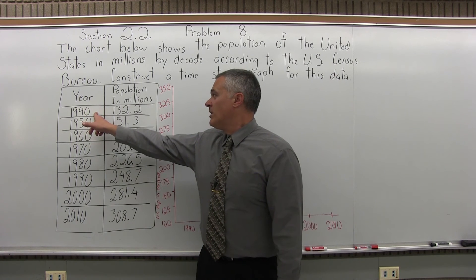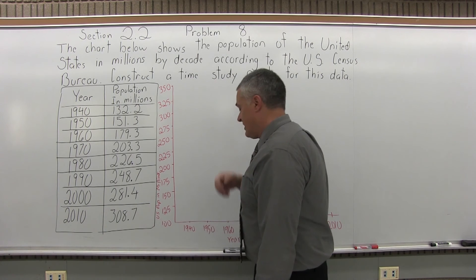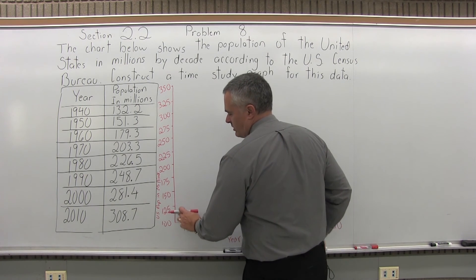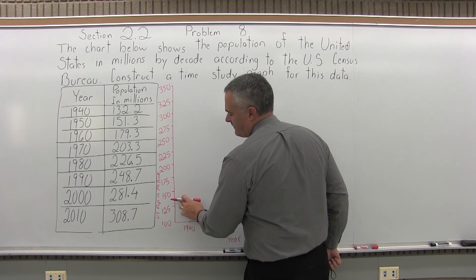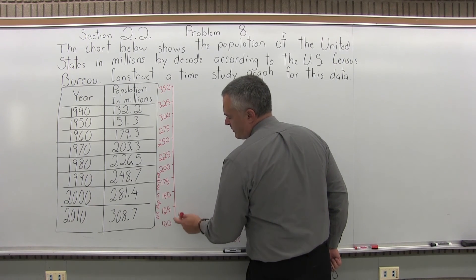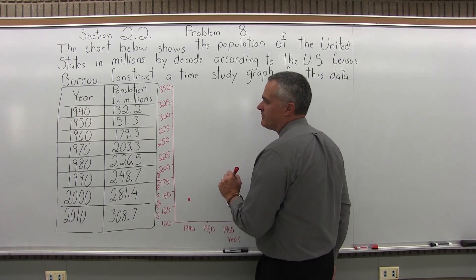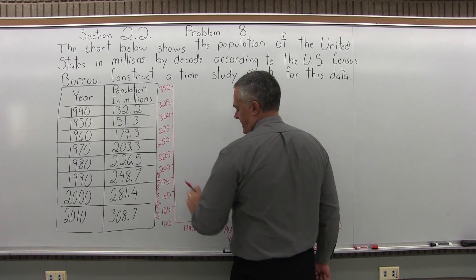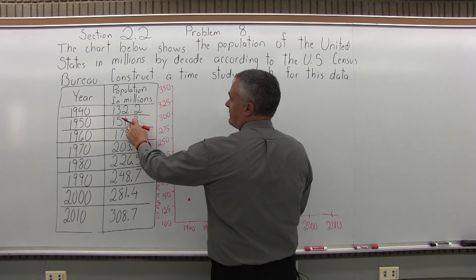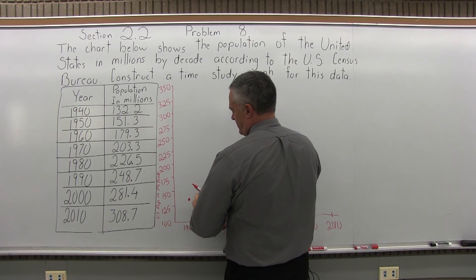So above 1940 I want a dot to represent 132 million. So I don't have exactly 132, it's 125, 150. So 130 would be somewhere between the 125 million and the 150 million, about like that. The next dot over the 1950 will be at 151.3 million. So by eye, that's going to look like it's 150 million, it'll be a tiny bit higher.